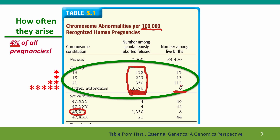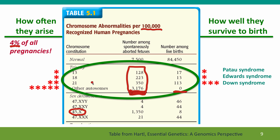Some of them, however, do survive. Trisomies for chromosome 21, chromosome 18, and chromosome 13 can survive. We're most familiar with Down syndrome, trisomy 21. Trisomies 13 and 18 can also survive, although children with these trisomies are much more severely affected than children with Down syndrome. Even for Down syndrome, which we think of as being a very viable trisomy, about three times as many pregnancies are spontaneously aborted as go to term — so even then, this is a serious cause of failure of pregnancy.